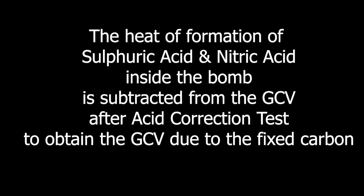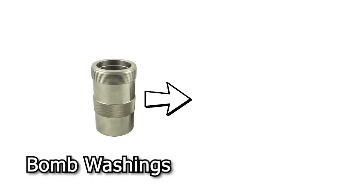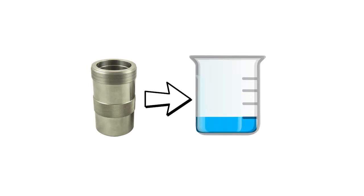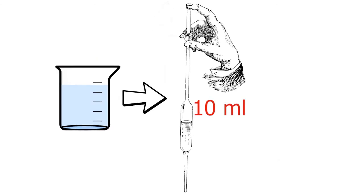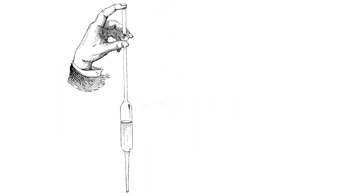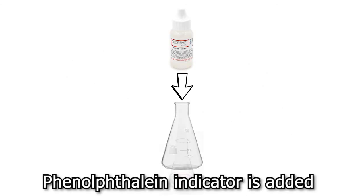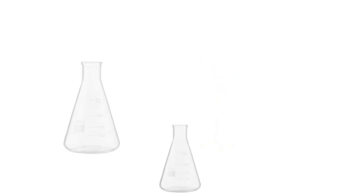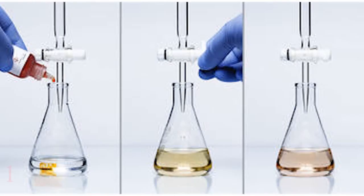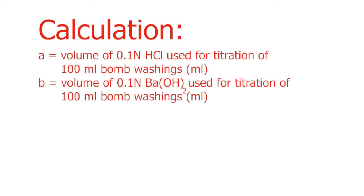In the acid correction test, the water in the bomb contains sulfuric and nitric acid whose heat of formation is adjusted. The bomb washings are diluted to 100 ml using distilled water, and boiling evaporates carbon dioxide present in the solution. Ten ml of solution is pipetted and transferred to a conical flask for titration. The first titration is carried out against 0.1 normal barium hydroxide with phenolphthalein as indicator; 20 ml of 0.1 N sodium hydroxide is added and barium sulfate precipitate is filtered. The next titration is carried out with 0.1 N hydrochloric acid with methyl orange as indicator, and the calculation for acid correction is done accordingly.